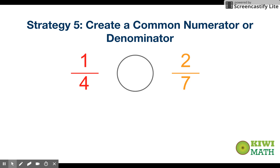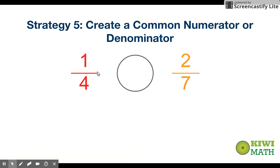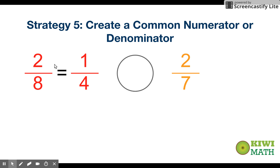When all other strategies don't work, we look at the fractions and decide whether to create a common numerator or a common denominator, choosing whichever involves simpler numbers. It's easier to work with one and two than four and seven, so I'd create an equivalent fraction with two as the numerator. One-fourth becomes two-eighths — multiply numerator and denominator each by two — giving us two-eighths and two-sevenths to compare.